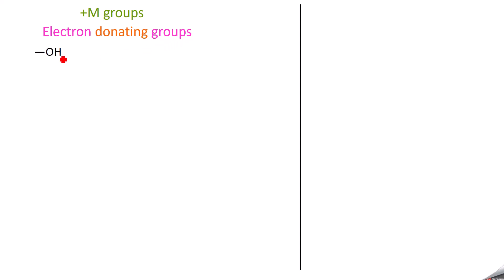Next, we will discuss plus M groups, which are electron donating groups — groups that show positive mesomeric effect. Examples include: −OH (alcohol), amines (−NH2), −OR (ether), thioalcohol (−SH), −OM, and phenyl (−C6H5), etc.